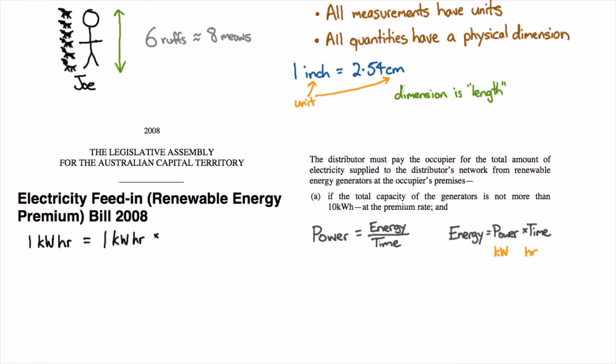Equals one kilowatt hour times one. I can always multiply by one and it doesn't change anything. So I can put anything inside here that adds up to one. What I'm going to put is, I know what a kilowatt is - a kilowatt is a thousand watts.